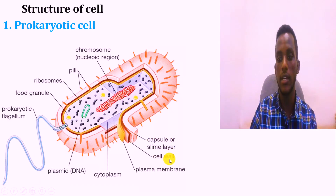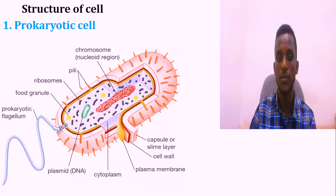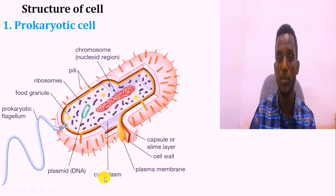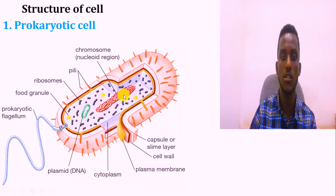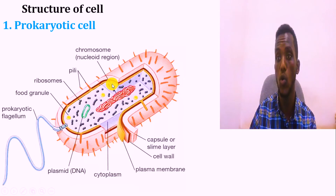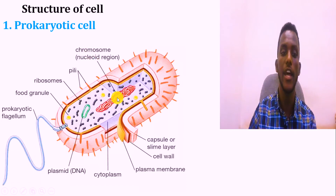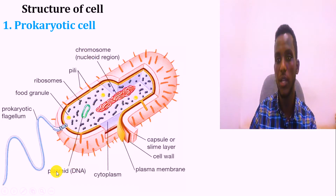Next to this there is a cell wall, then a plasma membrane. There is also the genetic material - that is the chromosome or nucleoid. In addition to this, there is a plasmid. The plasma membrane is very important for resistance and protein synthesis. There are also pili - hair-like projections on the surface.